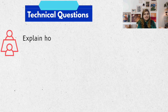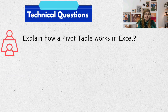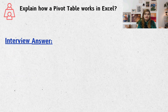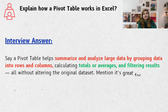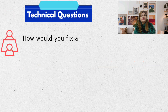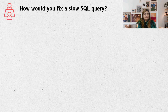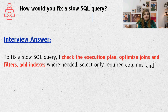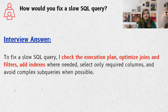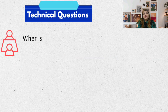Question four: explain how a pivot table works in Excel. Think of it like a magic summary tool — it helps you group and total your data without writing any code. Question five: how would you fix a slow SQL query? If your SQL is slow, it's like a traffic jam. You might need better roads — that is, indexes — clearer directions like filters, or removing extra steps like subqueries.